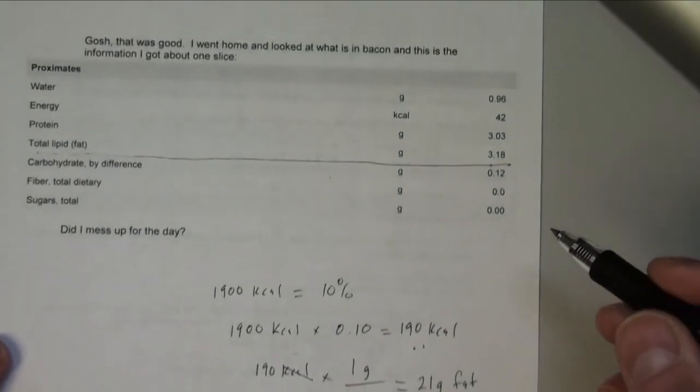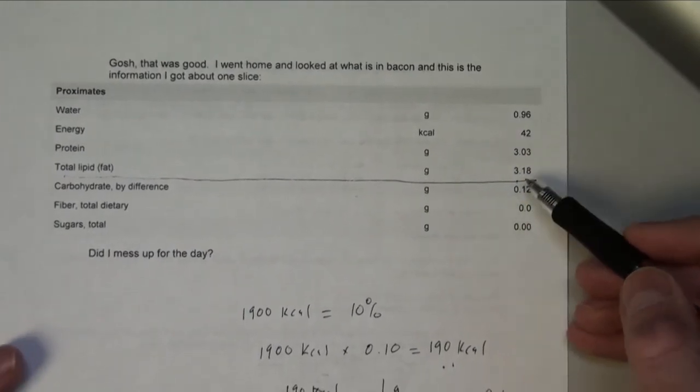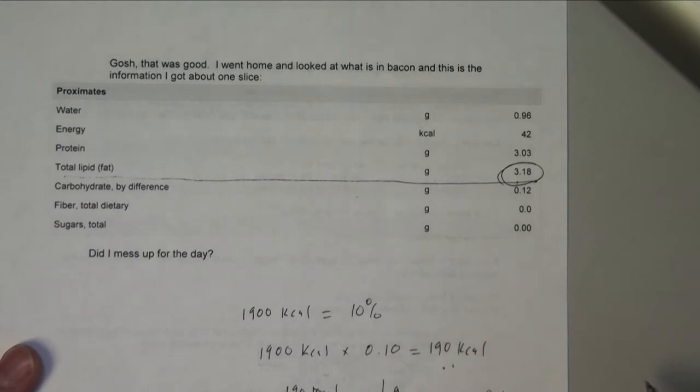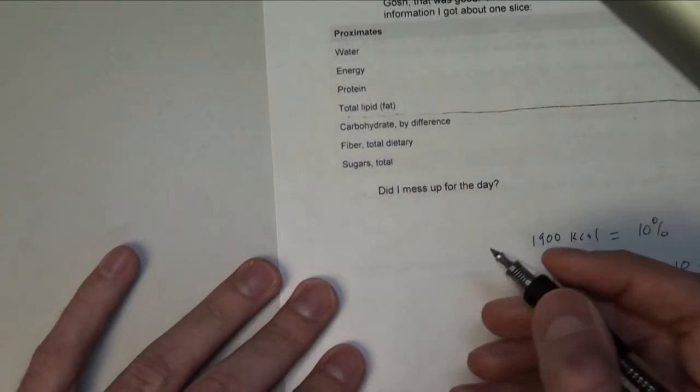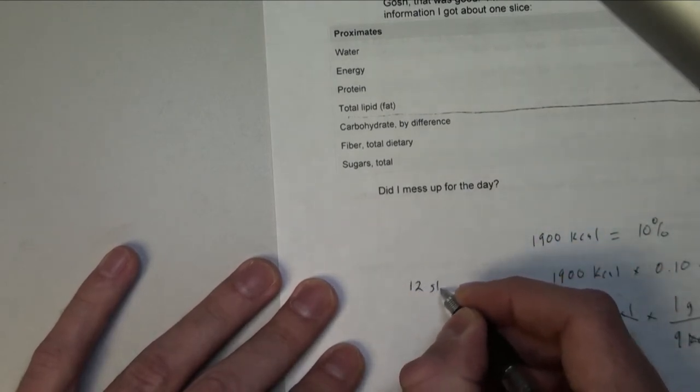So now the question is, eating 12 pieces of bacon, did I mess up? And that's where this number is going to come into play. Each one is worth 3.18. I can just round it to 3 for really simple math.